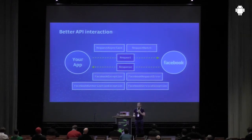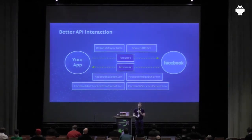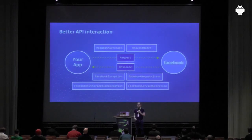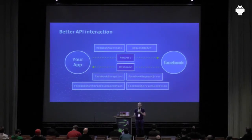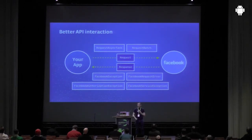Instead of just sending back an error object, you now have proper exception handling. Examples include FacebookAuthorizationException, FacebookServiceException, and if you've formed your request wrong, FacebookRequestError. This gives you a much better idea of what you're doing with the API and means you don't have to have your app built around this really low-level wrapper.